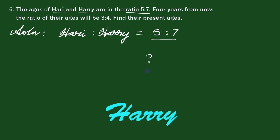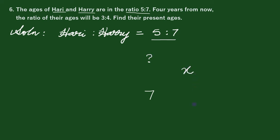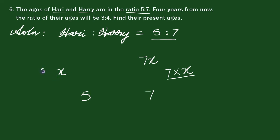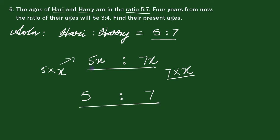Here we come — number 7, number 3. We can multiply: 7 times x, giving us 7x. Setting x: if we multiply by 2, then Hari's age is 5x and Hariya's age is 7x.